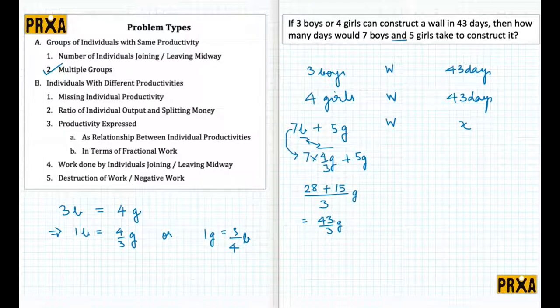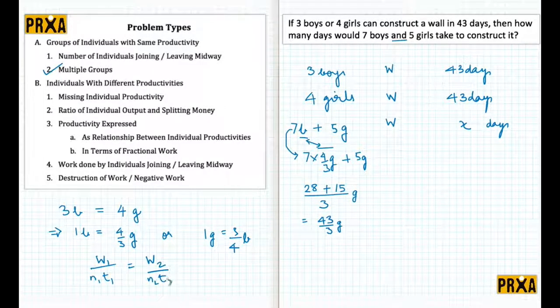Don't mind the fraction. The point is the number of people who will be putting in the effort, those people are equivalent to 43 by 3 girls. They must build the same wall in x days. Now I must be able to apply my w1 upon n1 t1 equals w2 upon n2 t2. Where I need to be careful is that I should be equating girls with girls only. If I had replaced girls here with three by four boys, I would have used the w1 upon n1 t1 of this situation, but since I've replaced boys with girls, I must replace this situation with this situation.